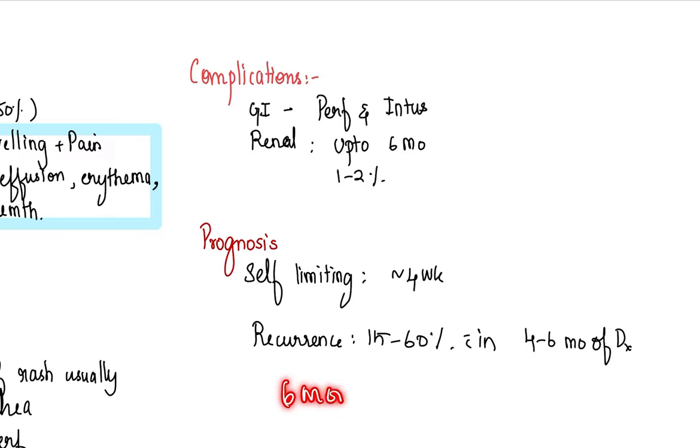Prognosis is good. It's a self-limiting disorder. Within four weeks, you will monitor for renal involvement for six months. Recurrence can be there, especially in skin, in 15 to 60 percent of patients within six months of diagnosis. Hope this class was useful to you and hope you'll be able to answer each and every question that is asked on HSP, both in your theory and practical exam. All the best and bye-bye.